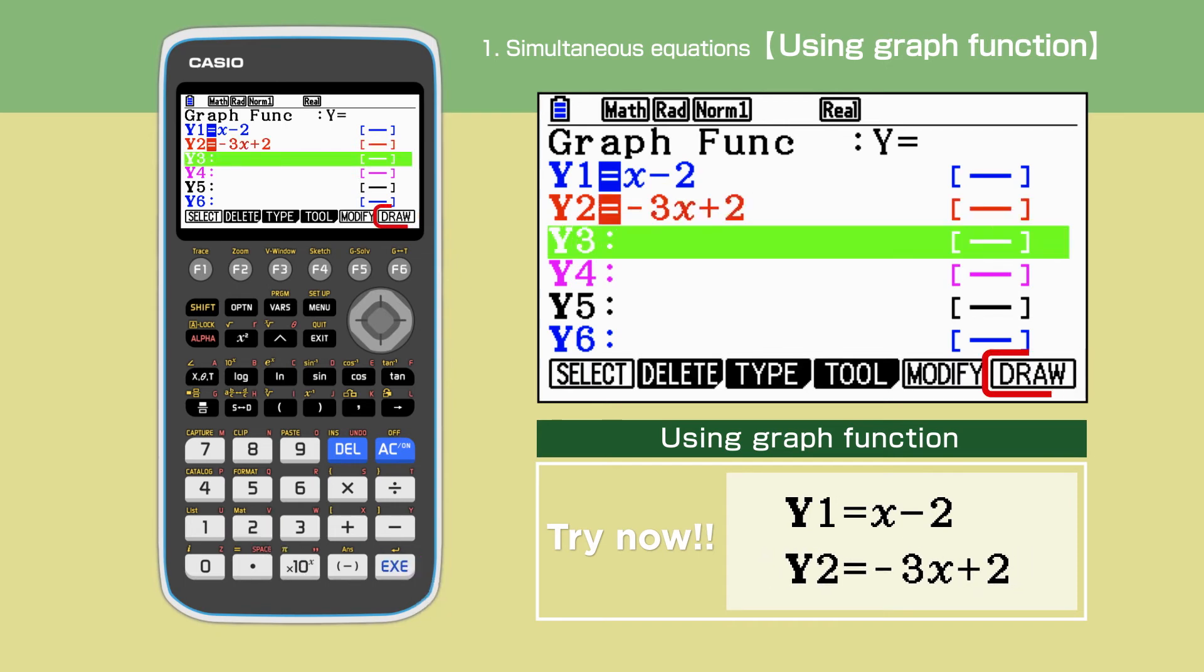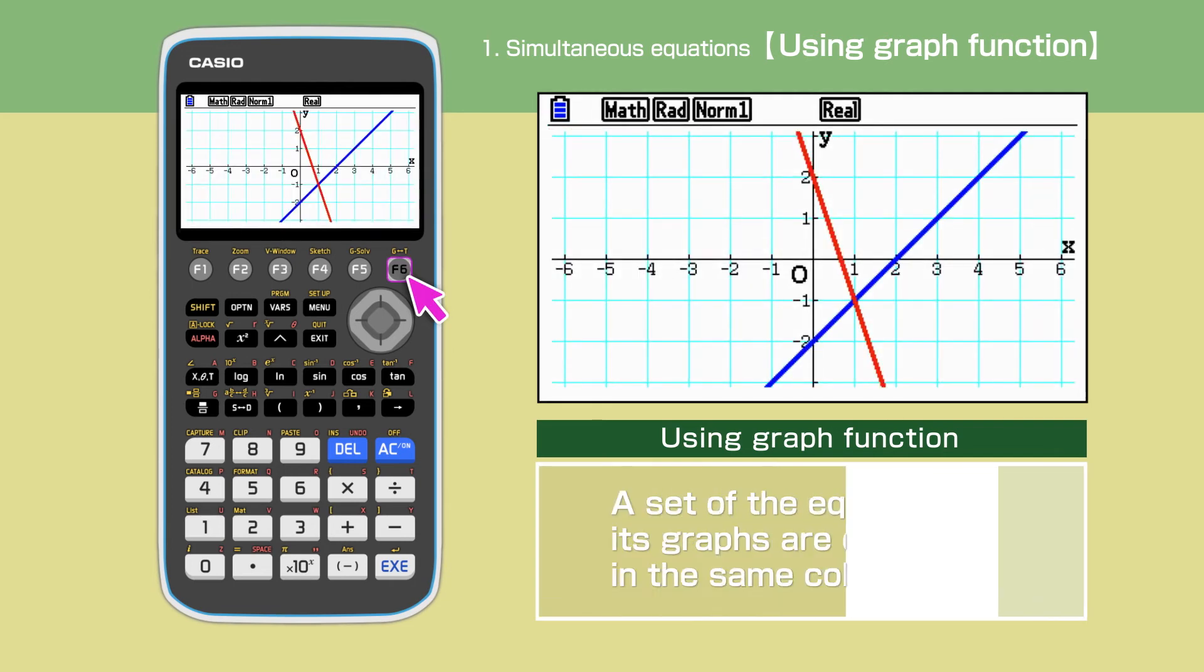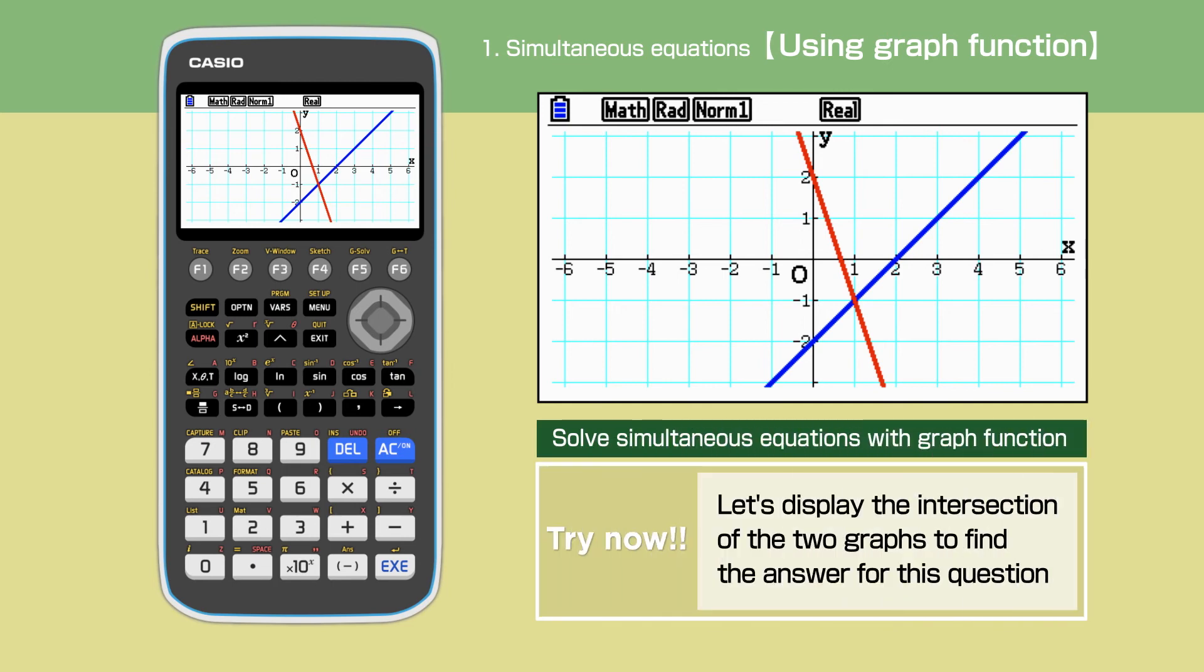Press F6 to draw the graphs. The two graphs are drawn on the same screen. The intersection of the graphs is the answer for this question.